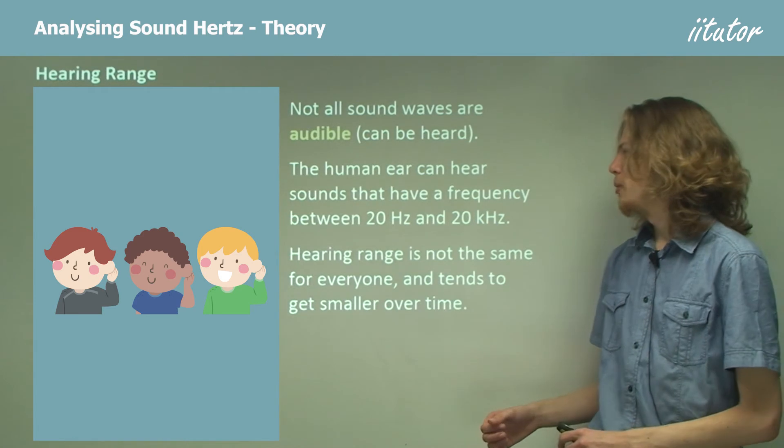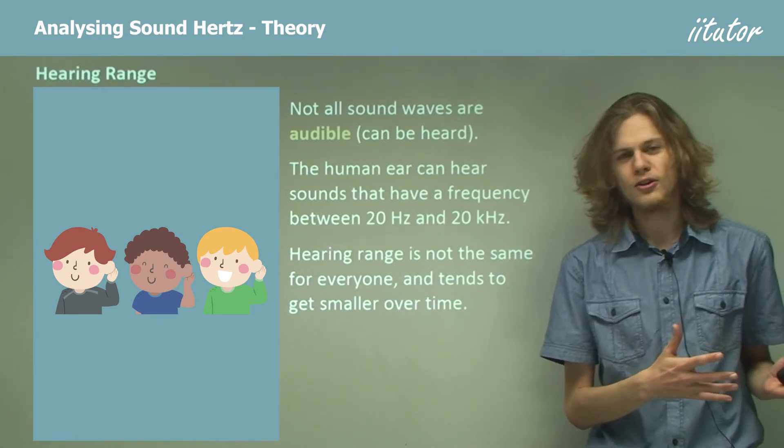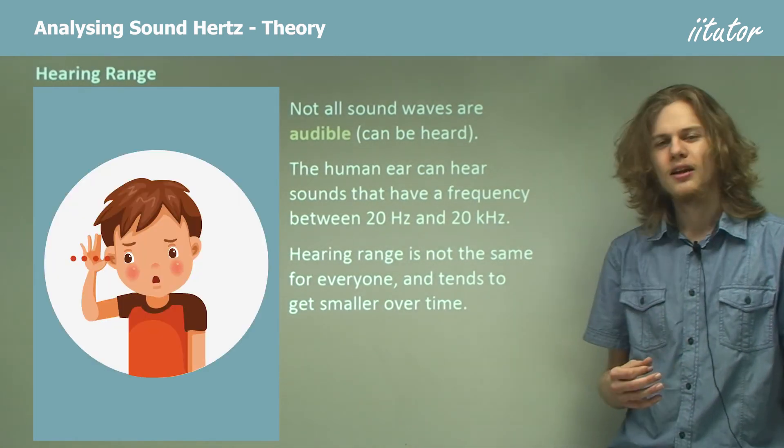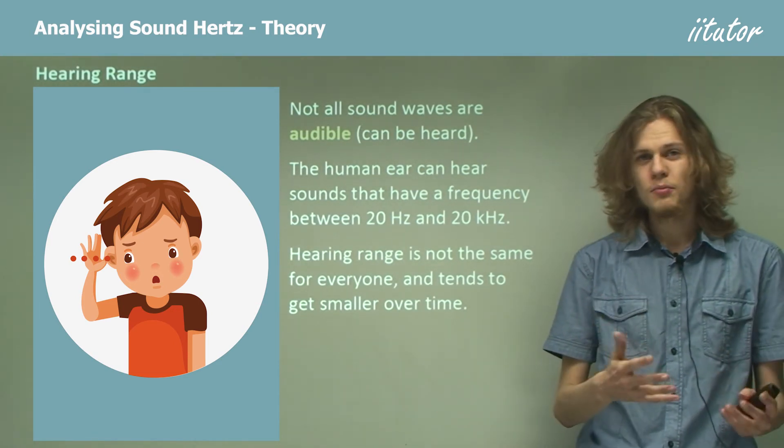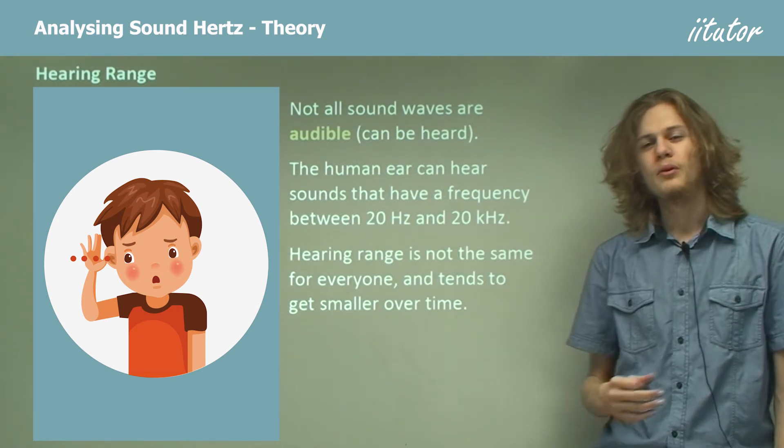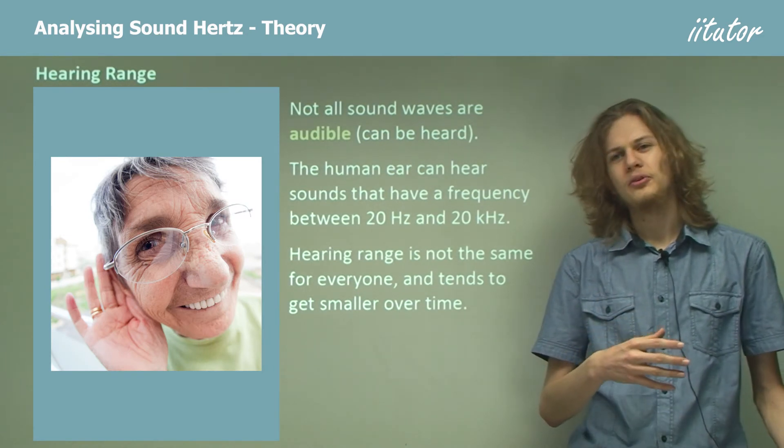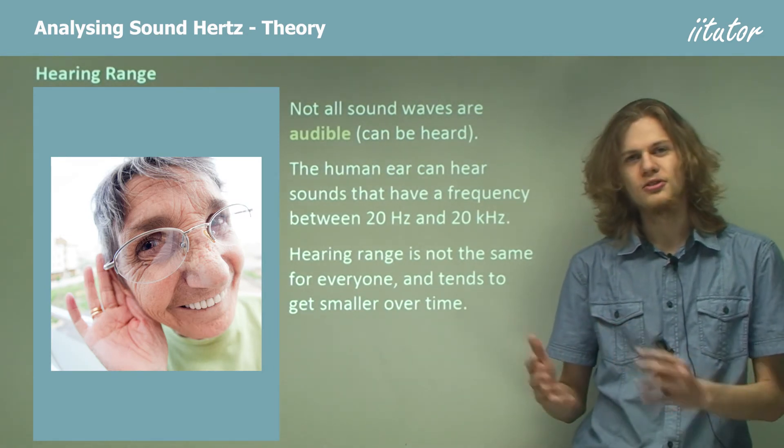Some people might have a different hearing range that might start at 30 or 40 hertz and go up to 14 or 15 kilohertz. The other thing is that over time, the hearing range of people tends to decrease. So when you're young, you might be able to hear 20 kilohertz, but as you get older, you'll only be able to hear up to 19 kilohertz, and then 18 kilohertz, and so on.